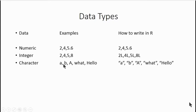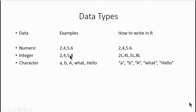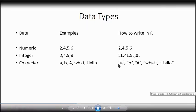To type character data in R, you cannot type them simply like A, B, etc. You will have to enclose it in quotation marks. For example, to type A in R, you type it enclosed in quotation marks. Similarly for B, capital A, 'hello', etc. Even if you enclose numeric or integer data in quotation marks, it will be considered as character data.